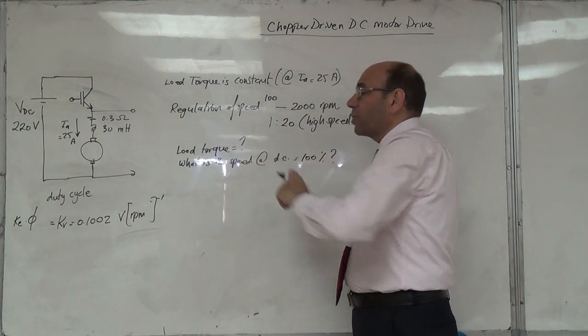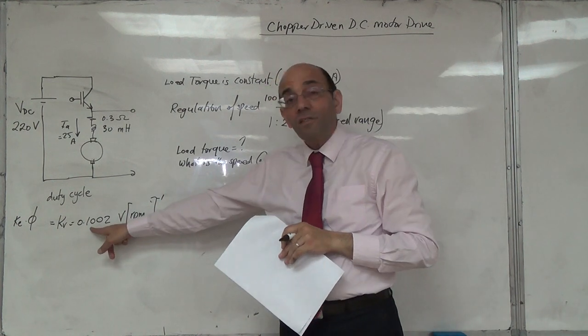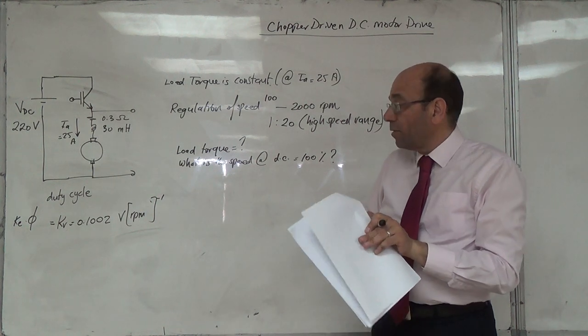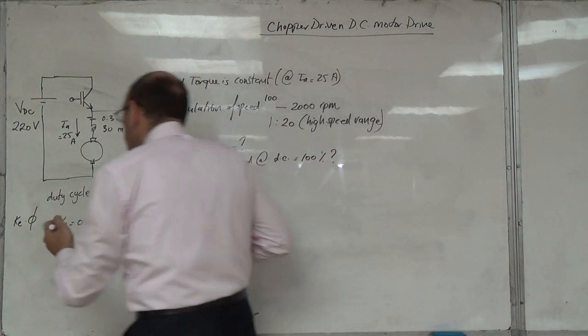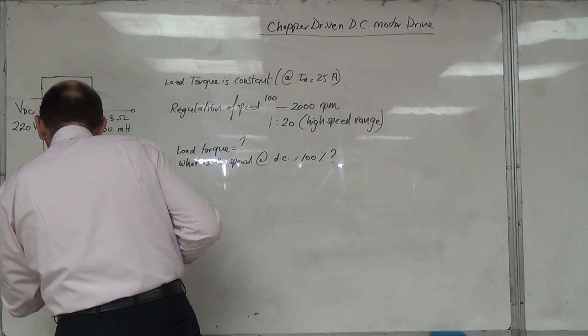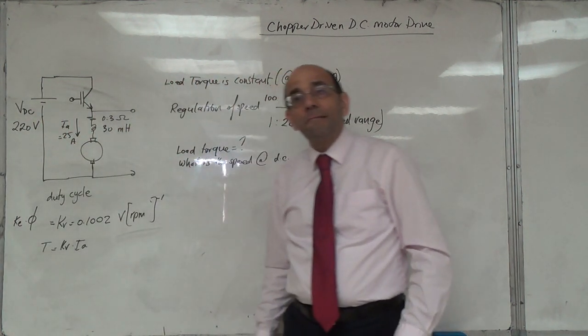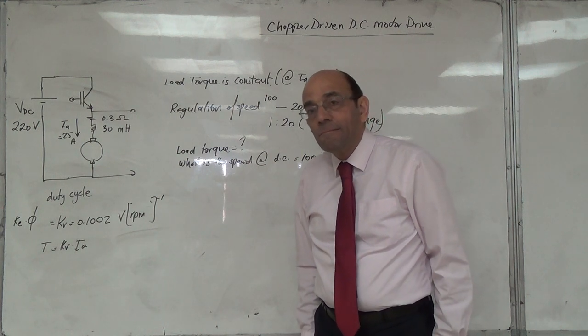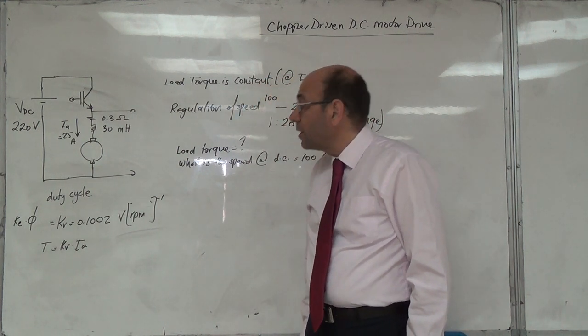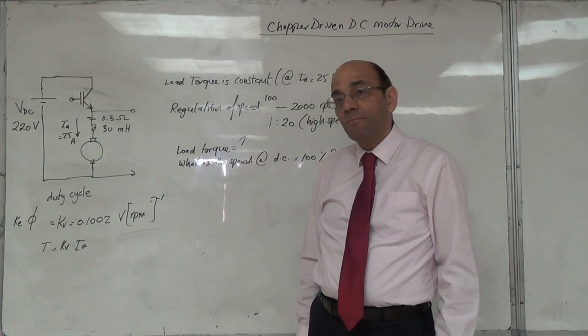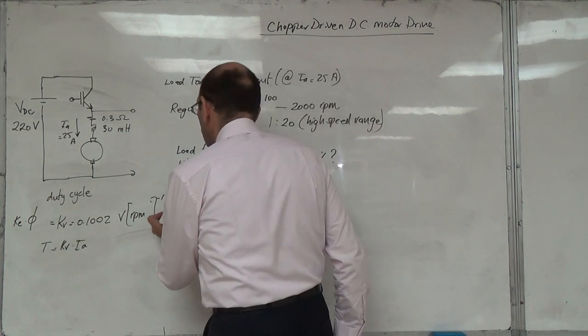So we need to do regulation from 100 to 2000 RPM. We need to ask about load torque and speed at duty cycle. Let's start with load torque, this is the easiest. I'll use this to get the torque. T equals KV times IA. No, wait, what's wrong? The units. What should be the correct units?